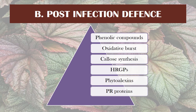These can be further divided into different types: phenolic compounds, oxidative burst and generation of nitric oxide, synthesis and deposition of callus, hydroxyproline-rich glycoproteins or HRGPs, phytoalexins, and PR proteins. Let us deal with each one of these individually.